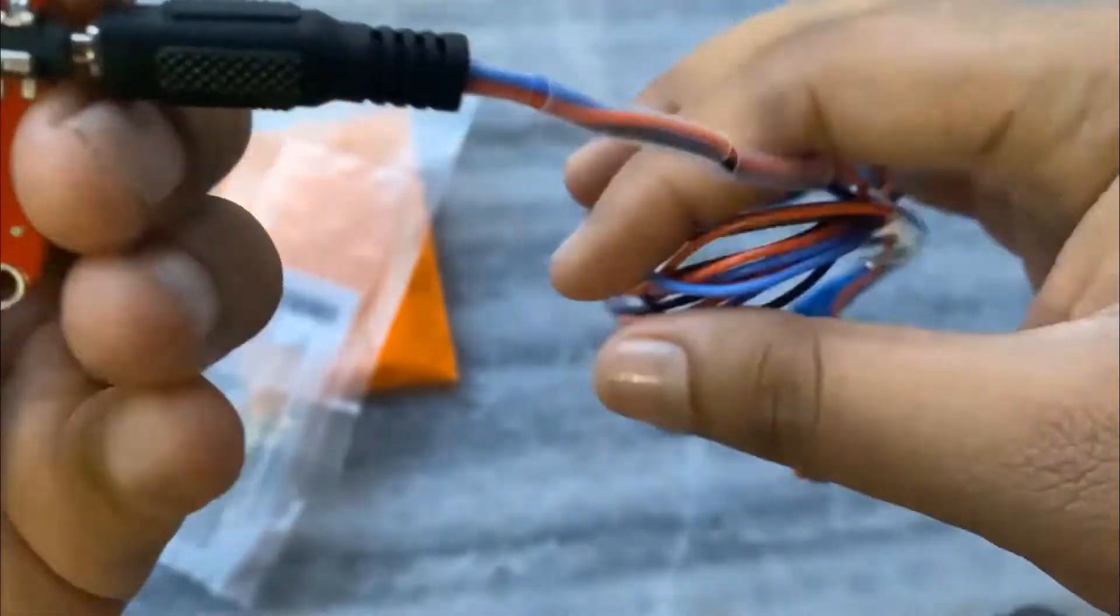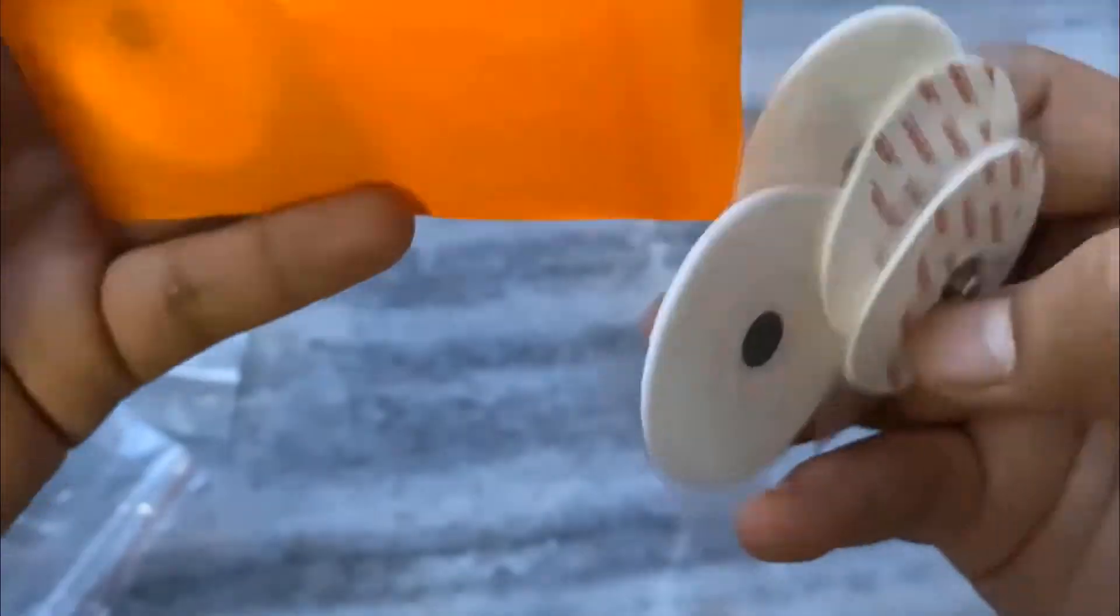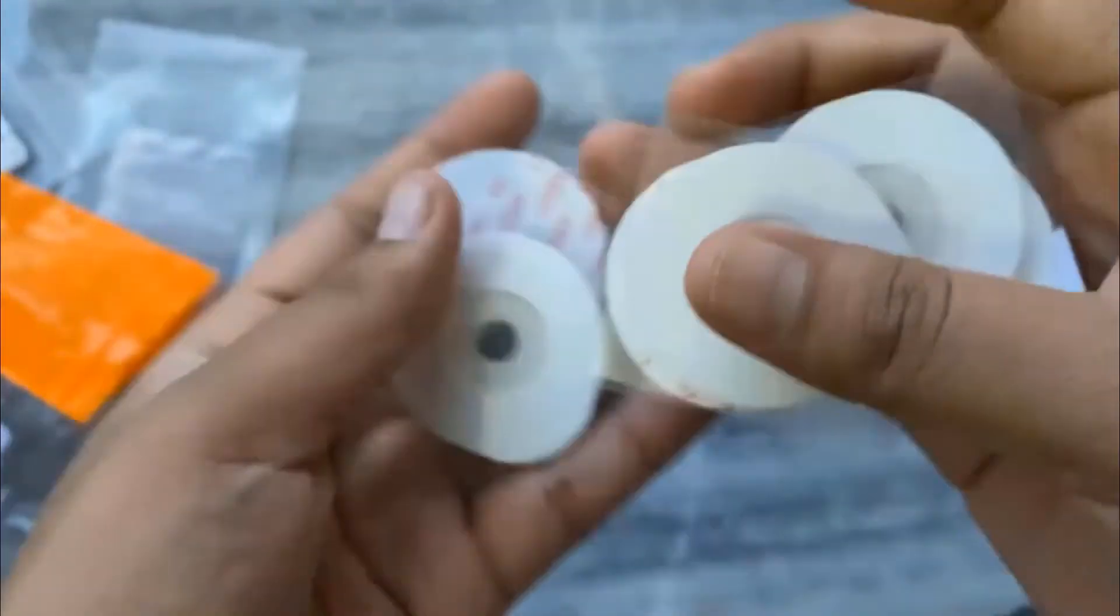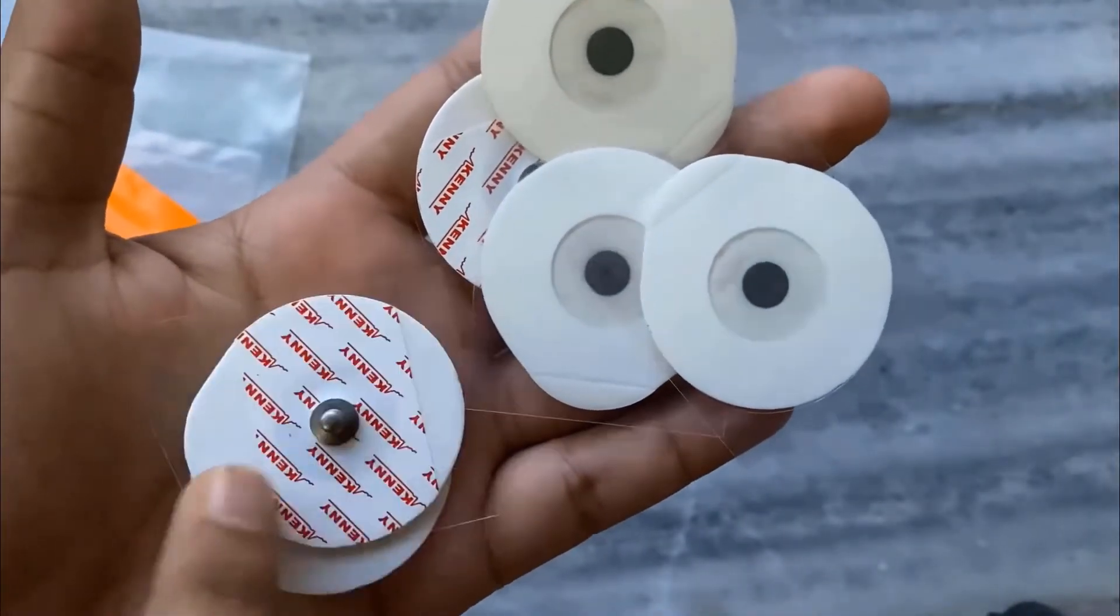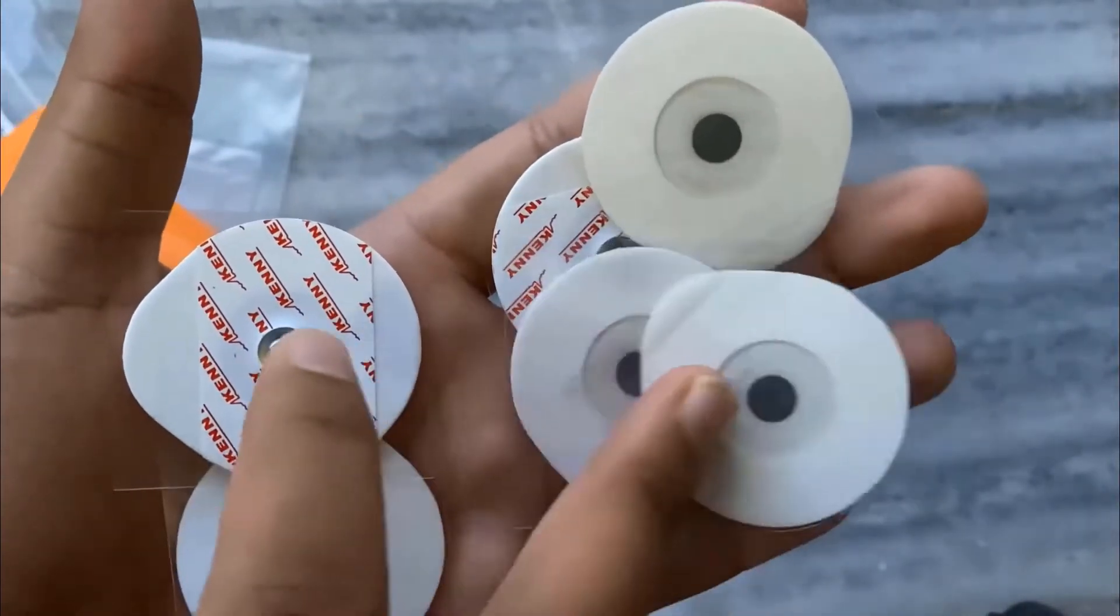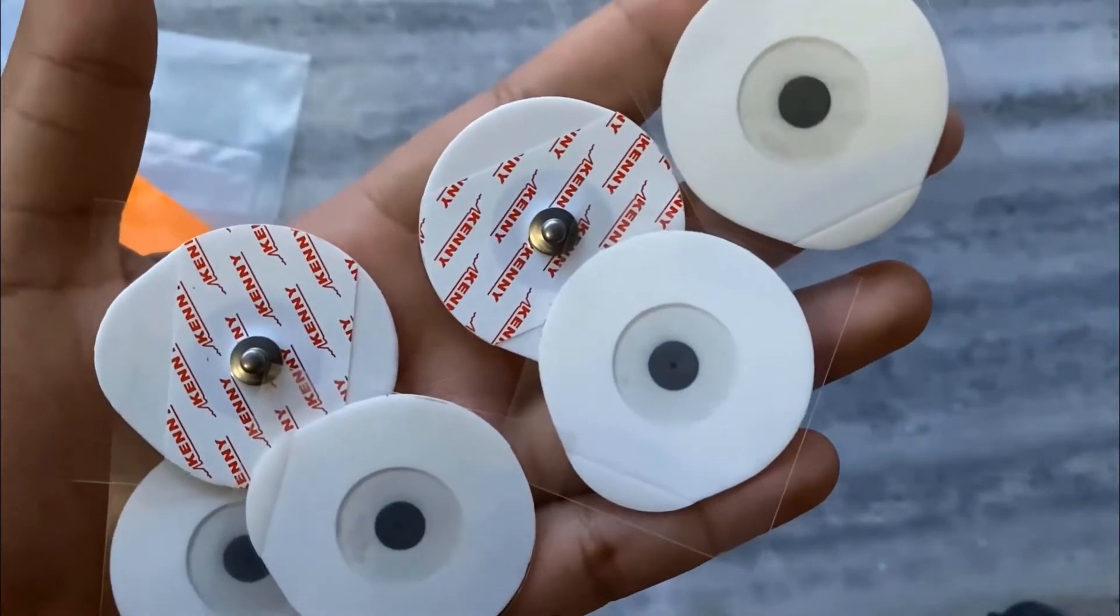Just insert the 3.5mm audio jack to this connector. These are the pads that come along with this kit. I have a total of six pads here that I got inside the kit. Each pad has a plastic layer covered on the jelly type O. You have to remove these plastic stickers while attaching the sensor to the body part.